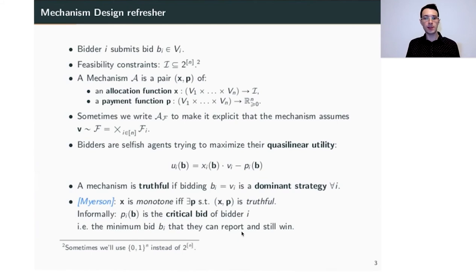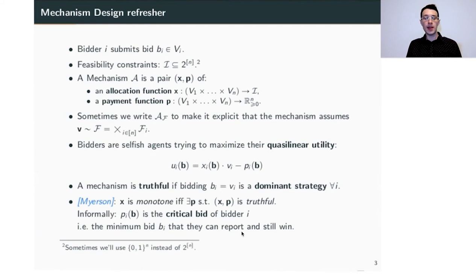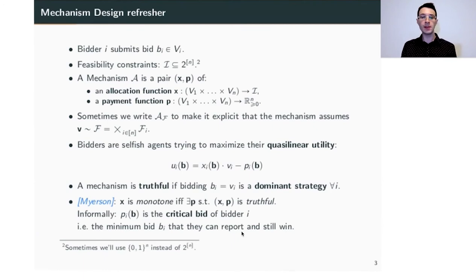The bidders are selfish agents trying to maximize their utility. A mechanism is truthful if it's a dominant strategy for every player to bid their true valuation. A classic result of Myerson is that if an allocation rule x is monotone non-decreasing in its coordinate, then there exists a payment function that makes the mechanism truthful. The payment of bidder i is called the critical bid — the minimum bid they have to submit in order to still be a winner, fixing the bids of everyone else.